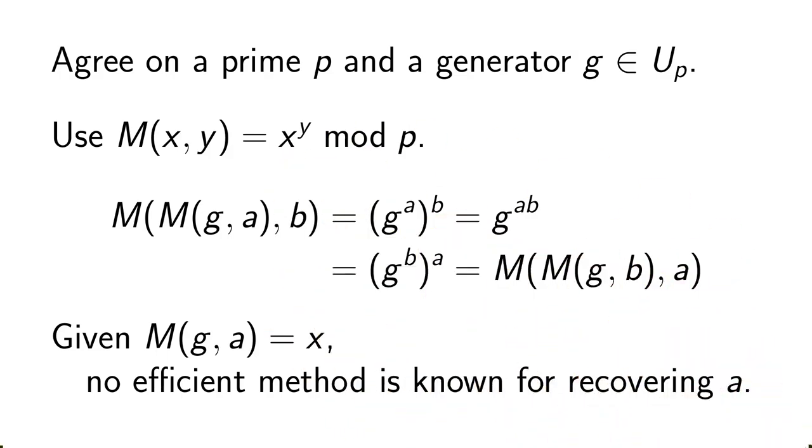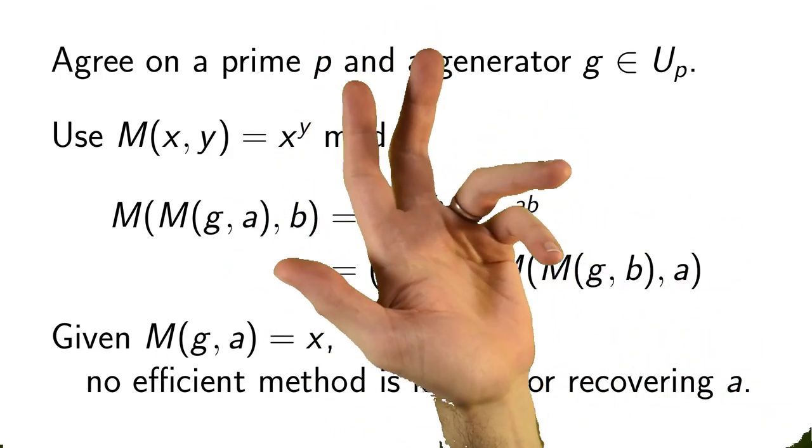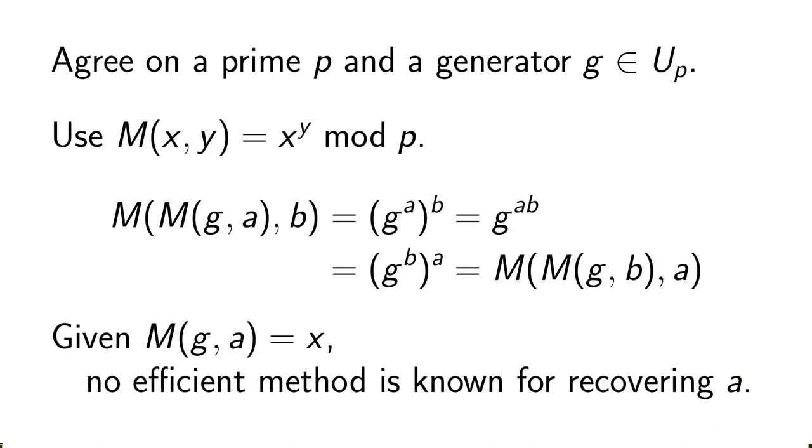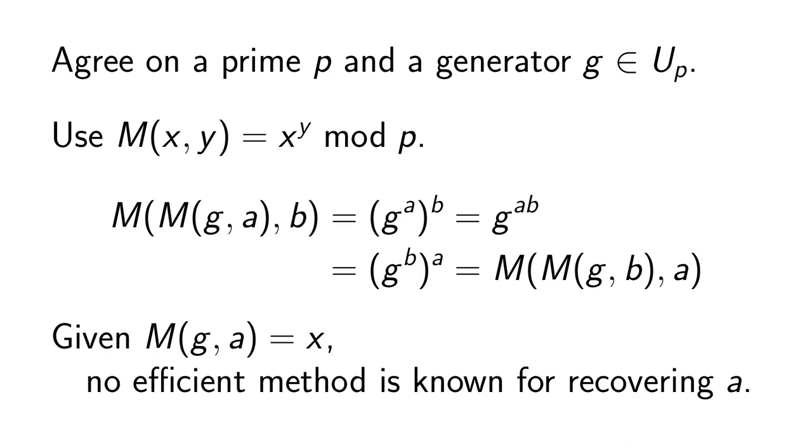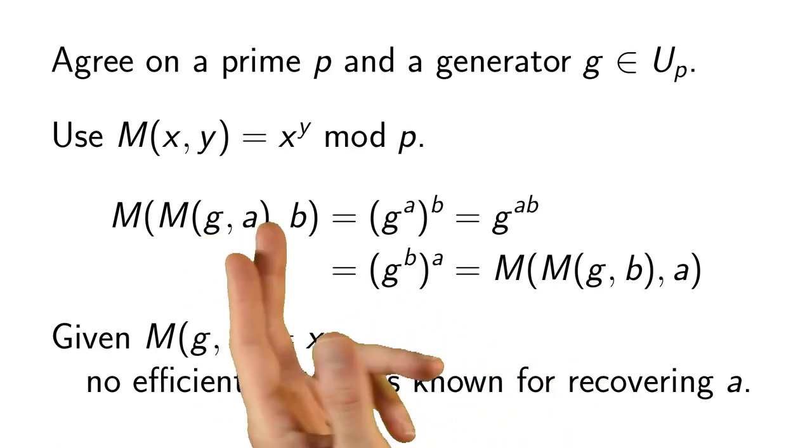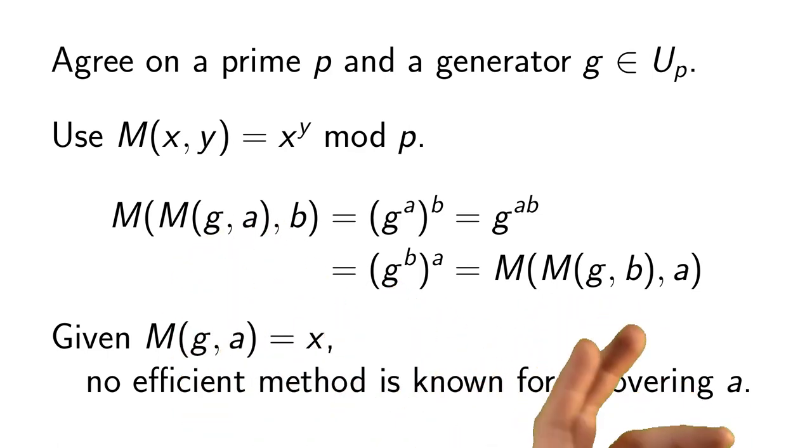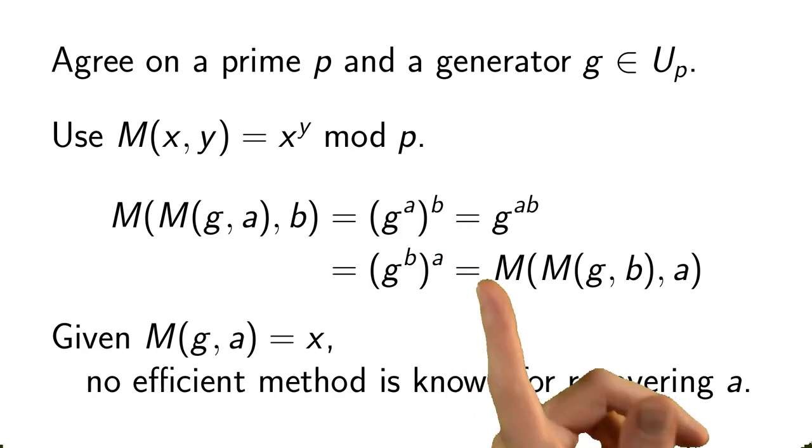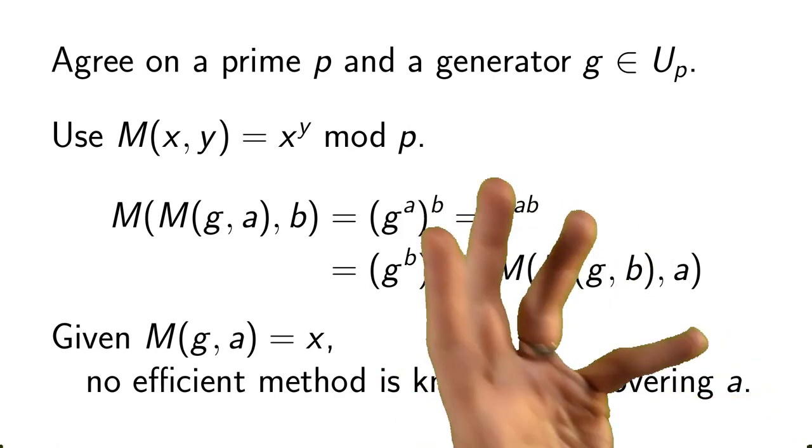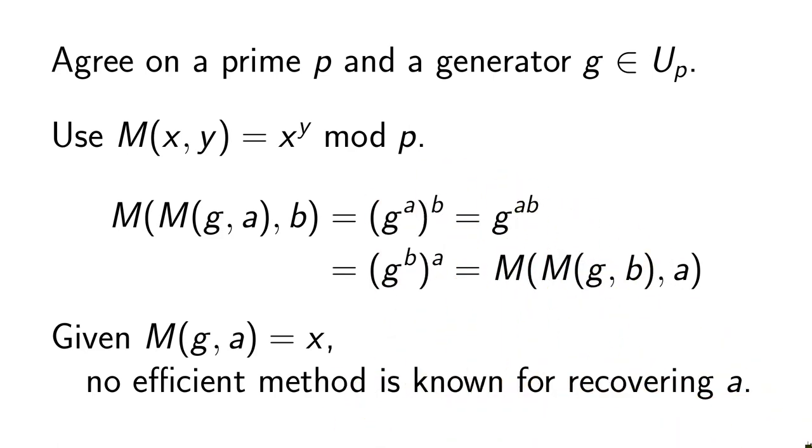So Alice and Bob will publicly agree on a prime number P and a generator G. Then we'll define the mixing function, M(X, Y), as being X to the Yth power reduced modulo P. And this choice of mixing function has the key property that if we mix with A and then with B, that's the same thing as mixing with B and then with A. And the reason is because even if we're reducing mod P, G to the A to the Bth power is the same thing as G to the B to the Ath power.